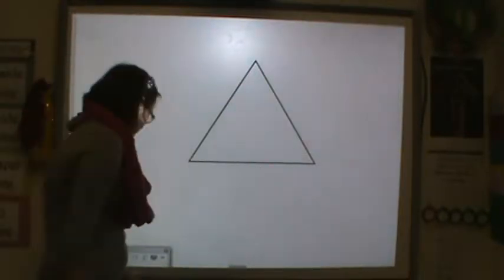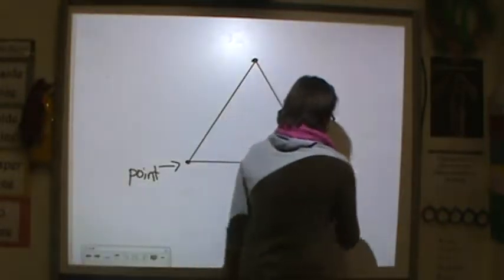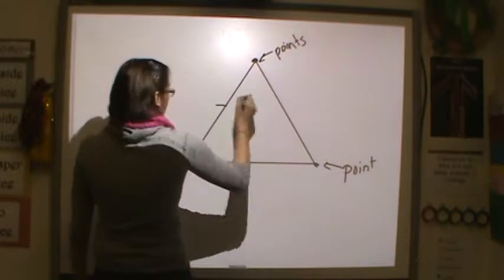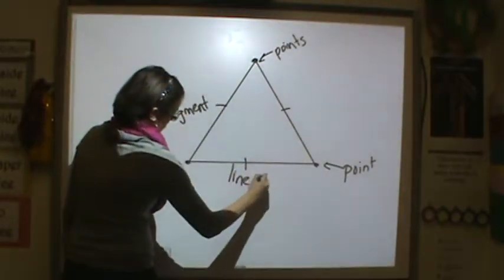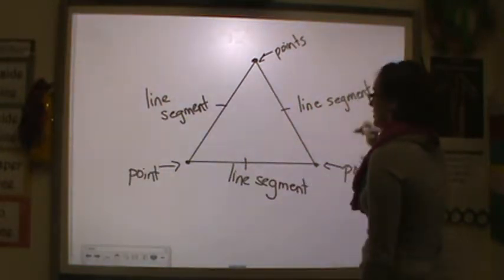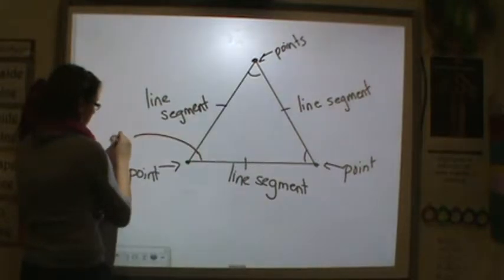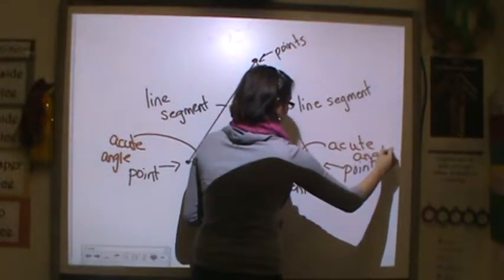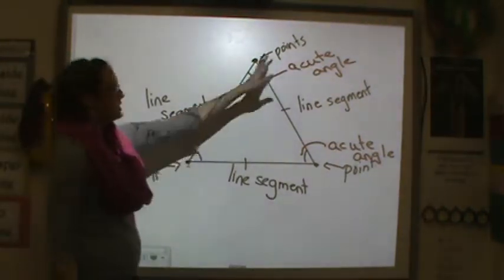So here we go. Here we have a triangle and this triangle has one, two, three points. You see it? Where these lines meet, there are points. This triangle also has one, two, three line segments. And then this triangle also has three angles — right here, right here, and at top. These are all acute angles. So that's what our goal is going to be today: to find all of these different geometric terms inside of a shape.